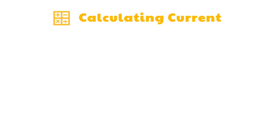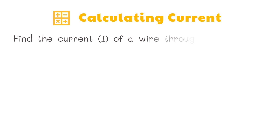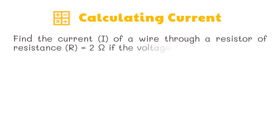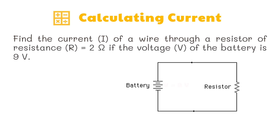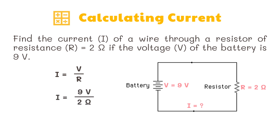Alright, now let's solve some simple problems. Let's try calculating for the current. Find the current of a wire through a resistor of resistance equal to 2 ohms if the voltage of the battery is 9 volts. We have the formula current equals voltage divided by resistance. The given voltage is 9 volts and resistance of 2 ohms. 9 volts divided by 2 ohms equals 4.5 amperes.